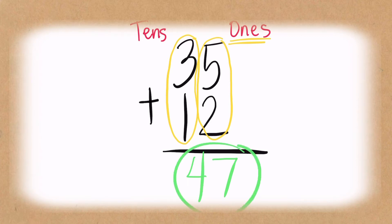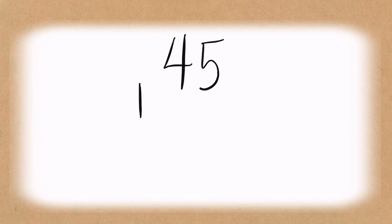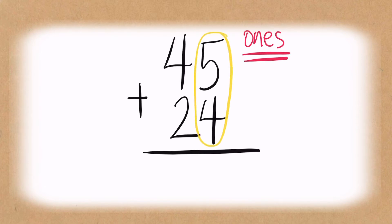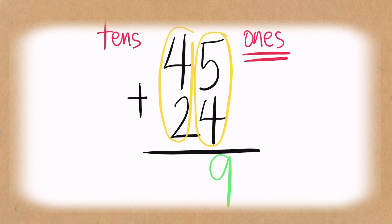The final answer is 47. Let's look at the next example: 45 plus 24 is equal to blank. Where should we begin? We should begin with the ones place, so that is five plus four — the answer is nine. Let's proceed to the tens place: four plus two gives you six. The final answer is 69.